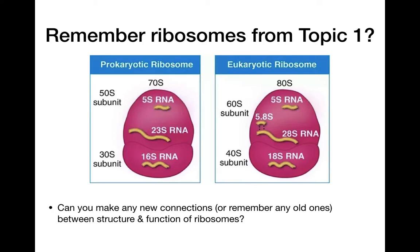Remember our ribosomes from topic one. What connections can you make between the structure and function of ribosomes? Their function is translation — protein synthesis. They have to allow the messenger RNA to pass through between the small and large subunit. The two subunits can encase around the messenger RNA and then translate it. The only difference between ribosomes in eukaryotes and prokaryotes is the size — eukaryotes are slightly larger at 80S versus 70S.